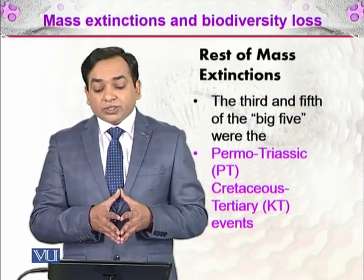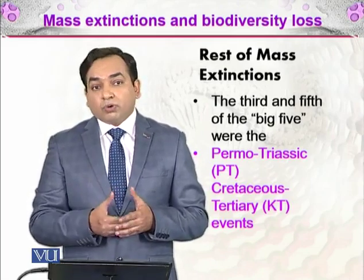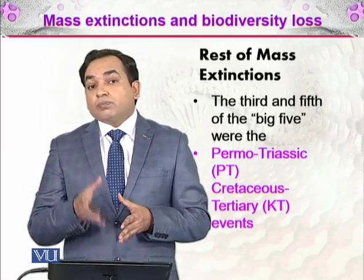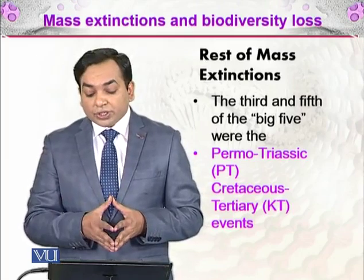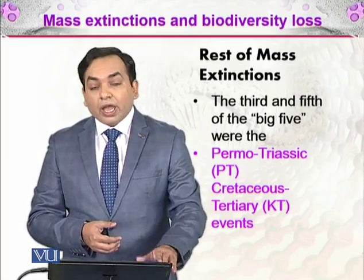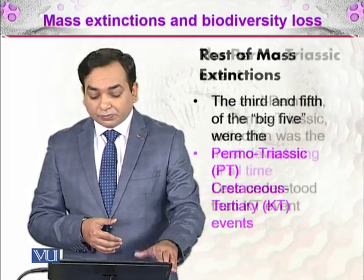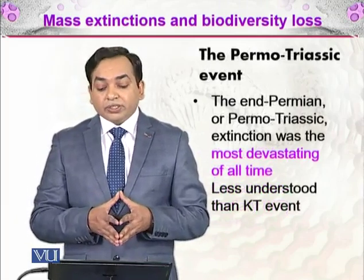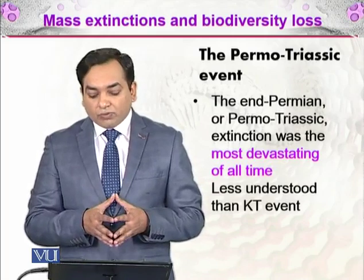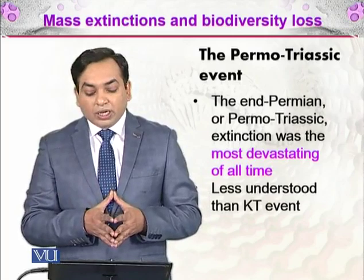The remaining two mass extinctions — the Permo-Triassic and the Cretaceous-Tertiary (KT) event — are the most important, most recent, and most studied. The Permo-Triassic is significant because it was one of the largest extinction events. The KT event is heavily studied because it has the most available evidence, though the Permo-Triassic is considered more devastating and is less understood.